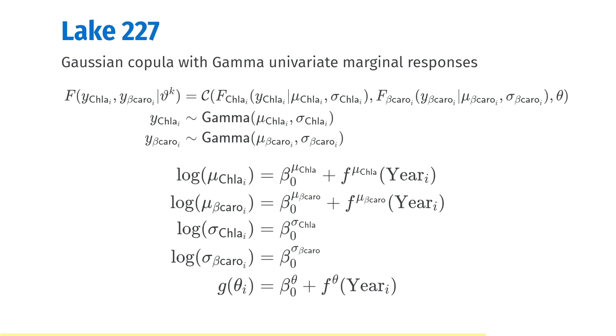So we have our copula function C, a Gaussian copula, with a parameter theta that measures the dependency. In our linear predictors for the means, we're going to have smooth functions of time, as in the linear predictor for theta, the dependency — but we're only going to have intercept or constant terms for the standard deviations.